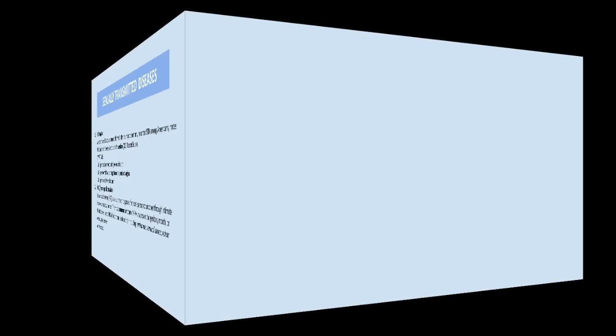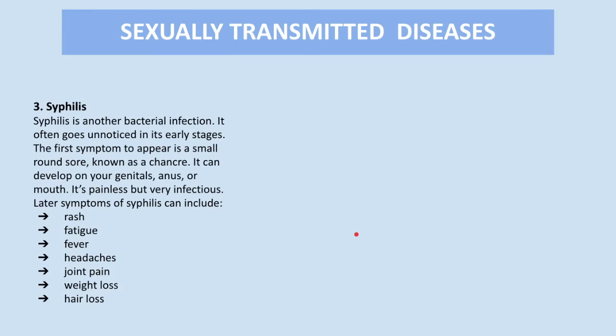Third, we have syphilis — another bacterial infection that often goes unnoticed in its early stages. The first symptom to appear is a small round sore known as a chancre. It can develop on your genitals, anus, or mouth. It's painless but very infectious. Later symptoms of syphilis are displayed on screen.